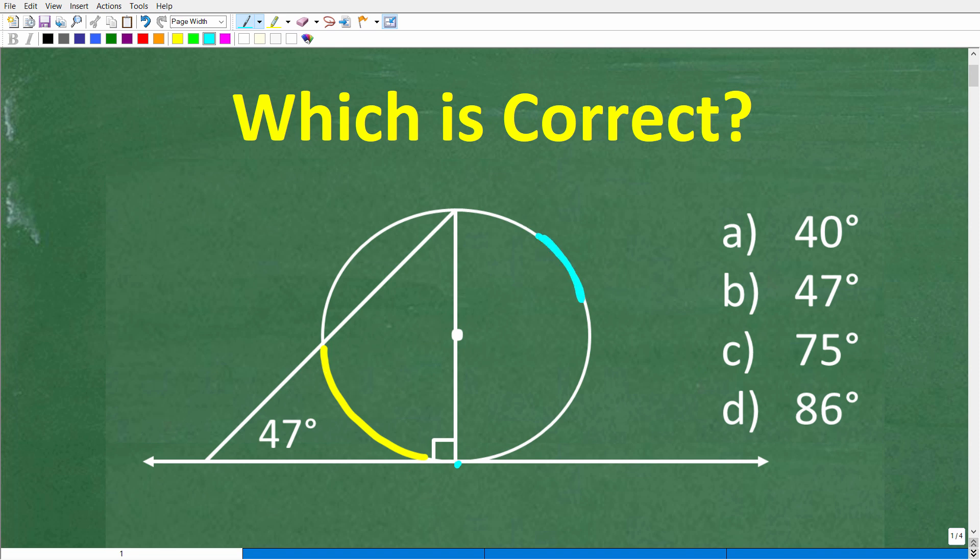Now, this angle of the triangle is 47 degrees. But what is the question? The question is, what is the measure of this arc right here in the circle, this arc highlighted with yellow? An arc is just a segment, a piece of the circle, and we're going to measure that in degrees.